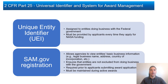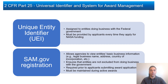2 CFR Part 25, Universal Identifier and System for Award Management, establishes the requirement that all federal award recipient entities obtain a unique entity identifier, or UEI, and register within the System for Award Management, or SAM.gov. UEIs are unique numbers assigned to entities doing business with the federal government. Applicants must provide their UEI every time they submit an application, register in SAM.gov prior to submitting an award application, and maintain SAM registration while they have an active award.